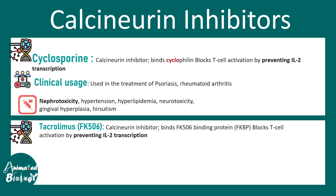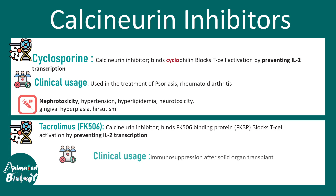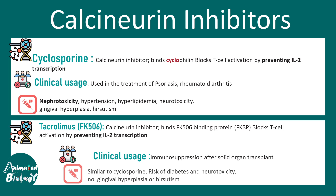Tacrolimus is another calcineurin inhibitor but works in a different way — it binds with the FK506 binding protein and blocks T cell activation. The end result is the same: it prevents interleukin-2 transcription and is a useful agent especially at the time of solid organ transplant. It is a potent immunosuppressive agent with similar nephrotoxic and neurotoxic effects as cyclosporine, and it also increases the risk of diabetes, but the difference is it does not cause gingival hyperplasia or hirsutism.